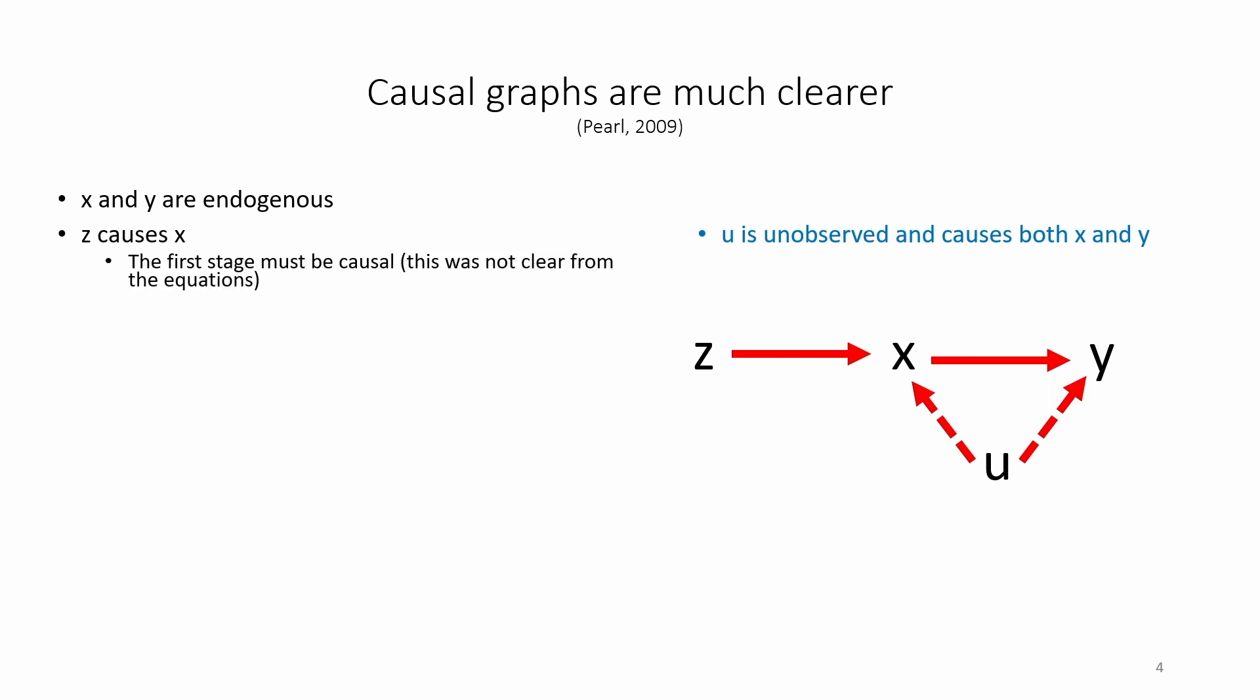The graph tells us something that was not clear in the equations, that the first stage of instrumental variables must be causal. Let's revisit the requirements of the instrumental variable z. According to the IV first stage condition, any correlation between z and x is a causal effect from z to x.